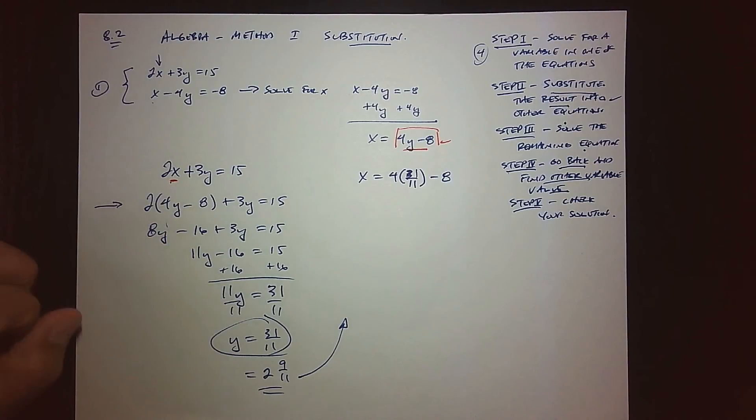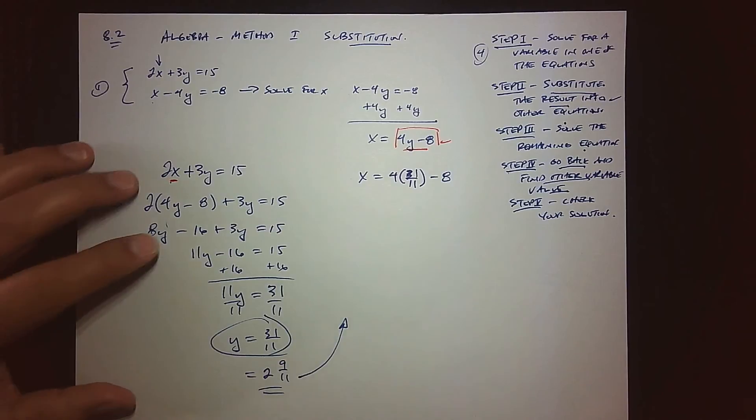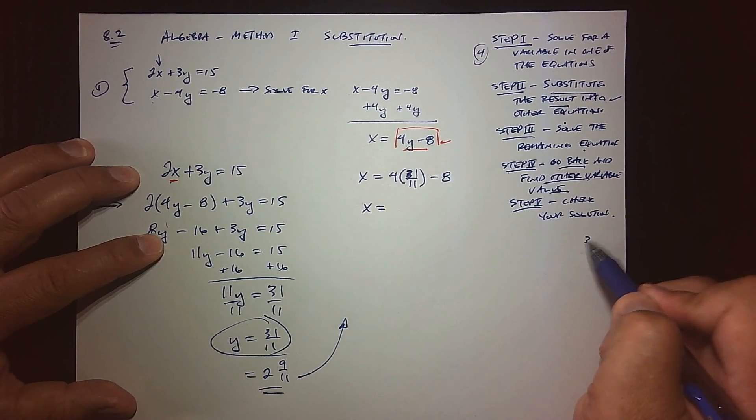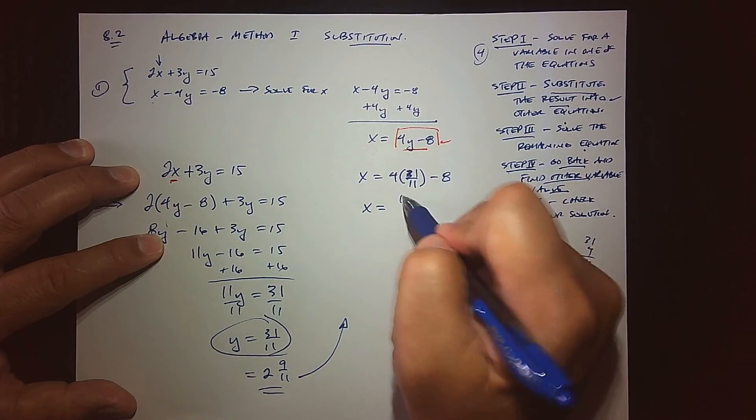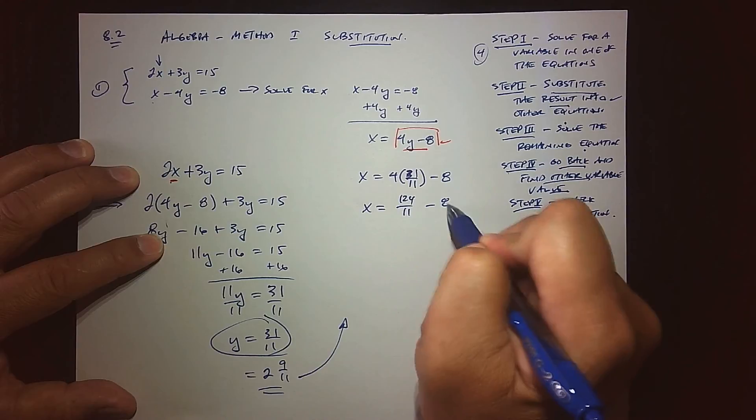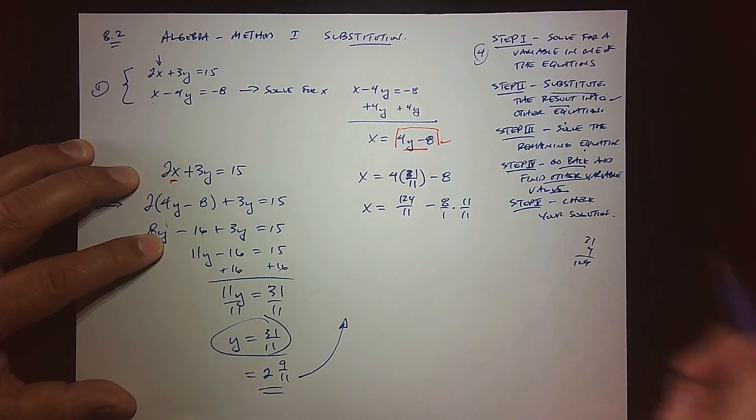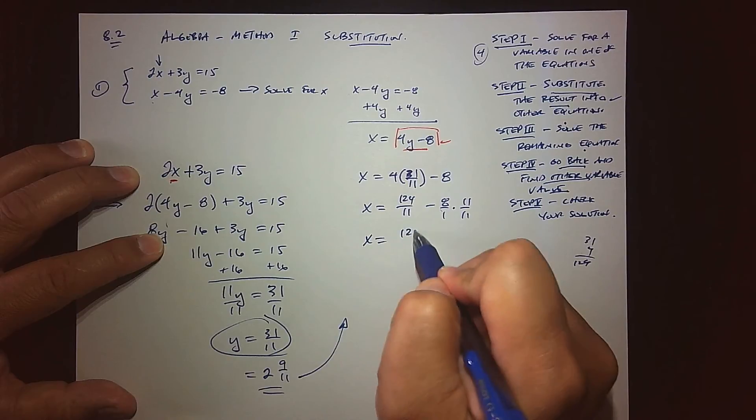That's a 31, with what I know it to be: y is 31 over 11. Now all I have to do is solve for the remaining variable. So this is crazy: I think 4 times—31 times 4 is 124 over 11, minus 8. The common denominator of 11, so I need to multiply that by 11.